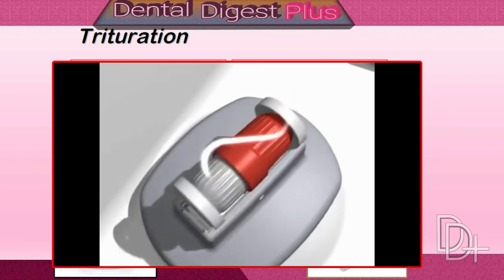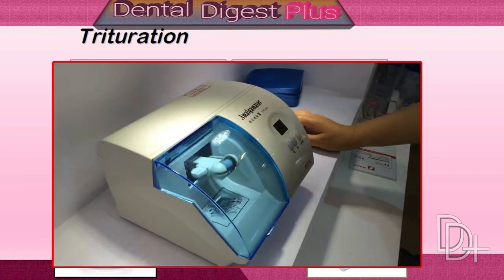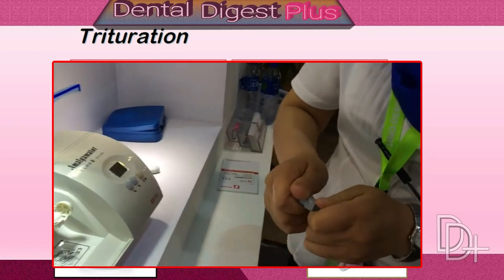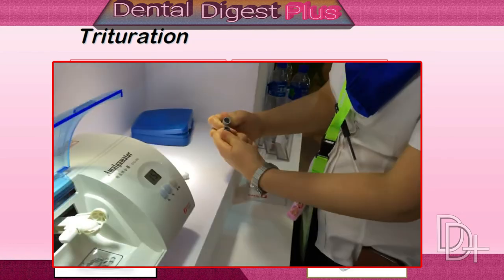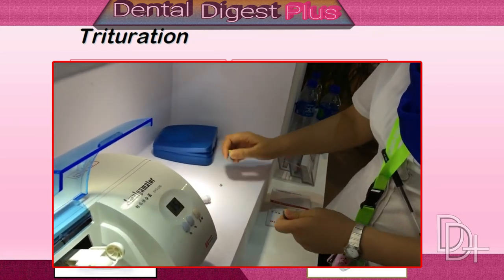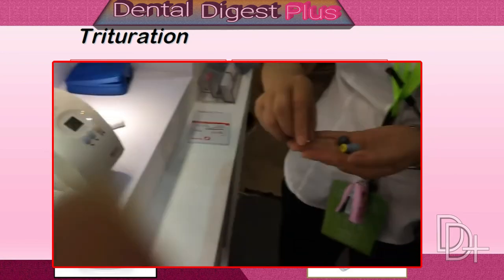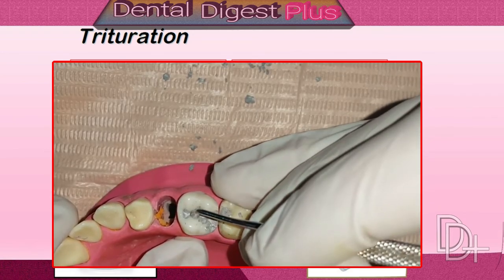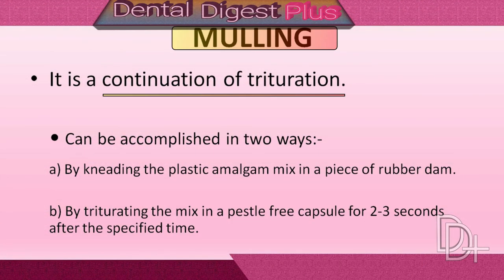After the amalgam is triturated, the mix from the capsule is removed and it can be condensed into the tooth cavity. Mulling is a continuation of trituration. It is done to improve the uniformity of the mass and coherence, and to get a single consistent mix.